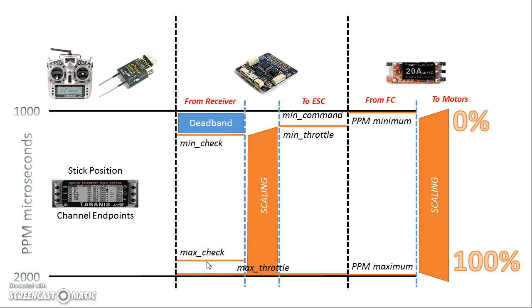Max check is used with the throttle — for example, when you push the throttle all the way up to do gyro or accelerometer calibration. Also, pushing the throttle up while moving the right stick left, up, or right can select profile one, two, or three. And when you push the stick down and to the right to arm the copter, that yaw channel going right is going above max check. So that's min check and max check.